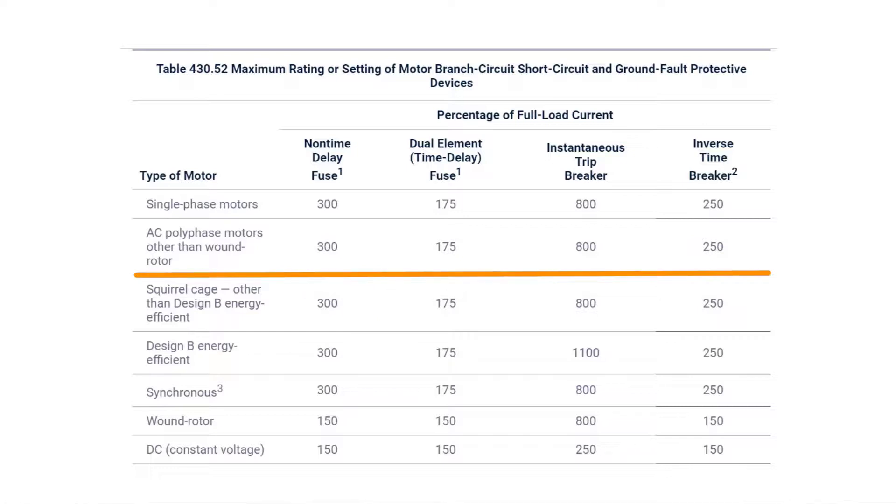We've got a non-time delay fuse selection, and we've got 300% and 300%. I want you to take your dark color highlighter and just make a fence post to segregate each side of that non-time delay fuse. Then we've got the dual element time delay fuse, put another fence post in. We've got the instantaneous trip circuit breaker, another fence post. We've got the inverse time circuit breaker, another fence post. Now we can just pick a box. Rather than look at this whole table, just pick a box.